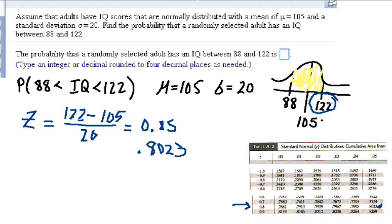But now that's the probability of less than 122, so it includes all this area, including this region right here, which I don't really want. I only want to know between 88 and 122. So what I'm going to do now is calculate the probability that it's less than 88, or this blue region.